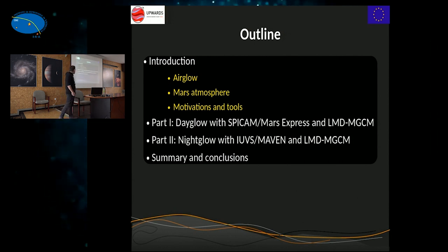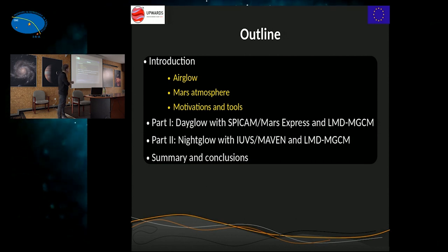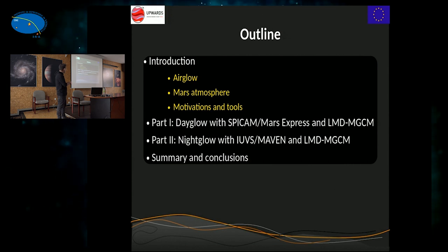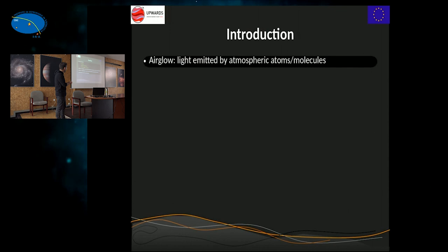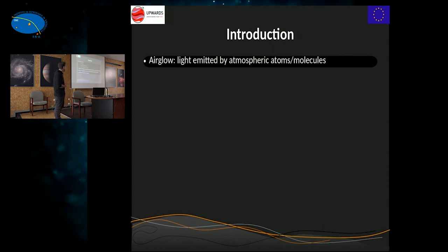This is the outline of the talk. I'm going to start with an introduction: first I will talk about airglow in general, some basic features of the Martian atmosphere, and I will introduce the motivations for this work and the tools we are using. Then I'll summarize a paper published last year about emissions in the day side, then present recent results about airglow in the night side, and finish with summary and conclusions.